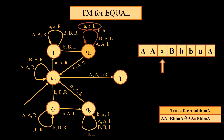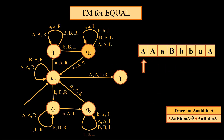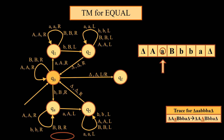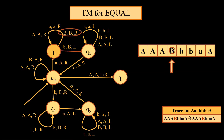Whatever symbol we get — maybe A, maybe B, maybe capital A or capital B — we will not change those, and we traverse left until we reach the end marker, which is delta. Once we come across the end marker, the direction of the head changes towards the right. We come across capital A and do not change it, as it has already been considered. Now we come across small a. The moment we come across small a, we convert it into capital A and begin the search for small b.